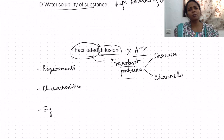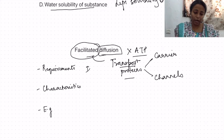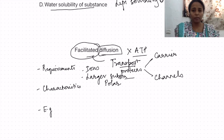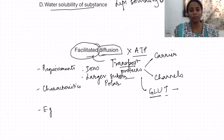The substances transported by facilitated diffusion are not lipid soluble — they can be ions, larger molecules, or polar substances. One important example is GLUT, the glucose transporter, where GLUT stands for glucose transporter, causing facilitated diffusion of glucose.